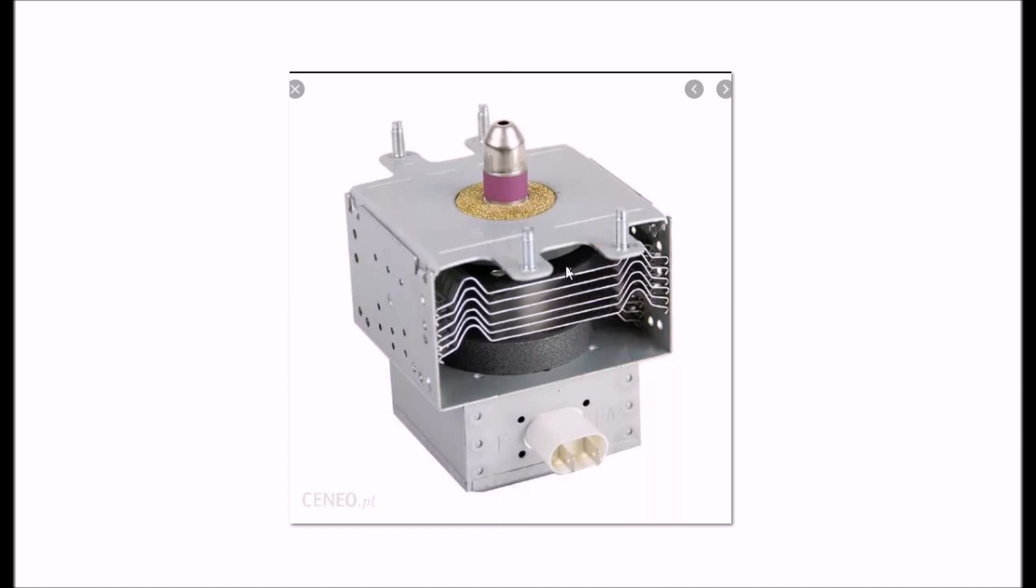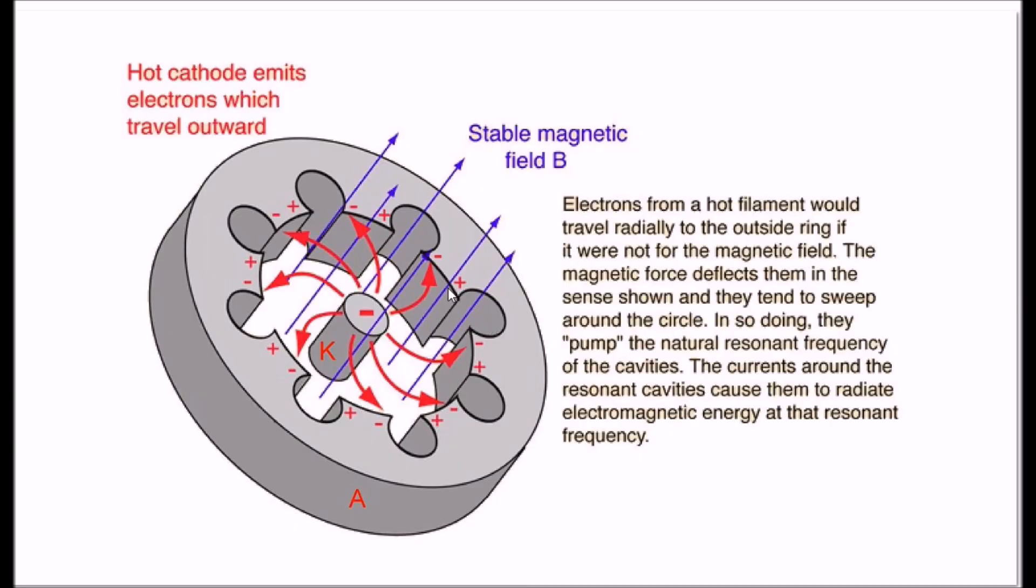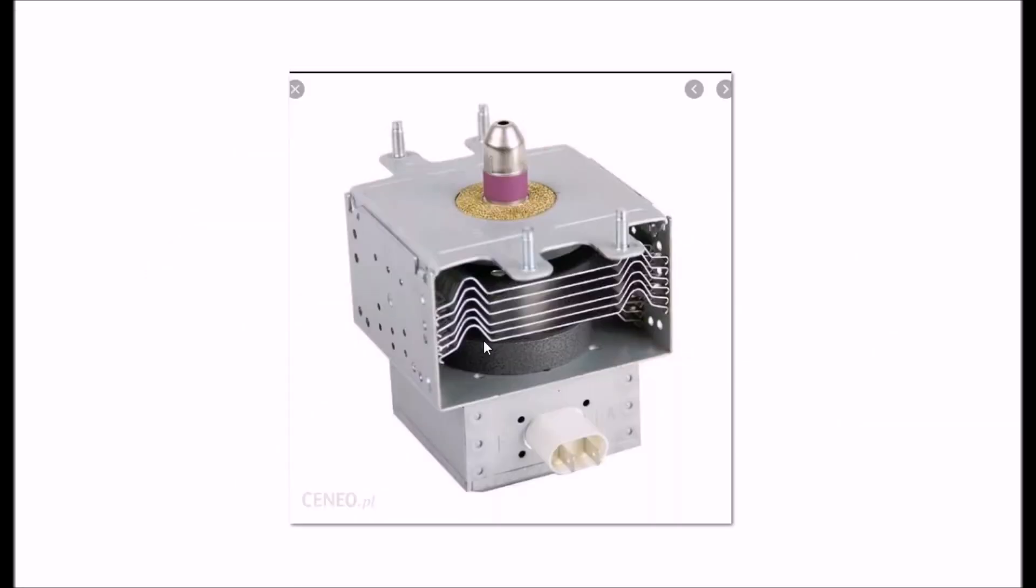Again, you can see the magnets are up in here. These heat sink fins are connected to the anode out here. For cooling purposes, obviously, you have a fan that blows air through it to cool off the magnetron.